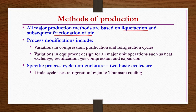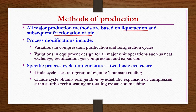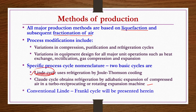One cycle is the Linde cycle, which uses refrigeration by Joule-Thomson cooling. Another is the Claude cycle, which obtains refrigeration by adiabatic expansion of compressed air in a turbo reciprocating or rotating expansion machine. However, we are going to see the Linde-Frankel cycle for the production of low purity tonnage oxygen.